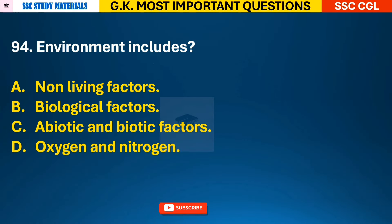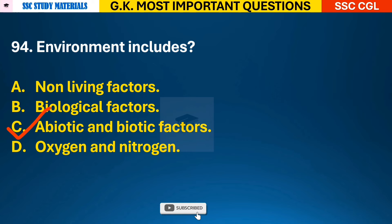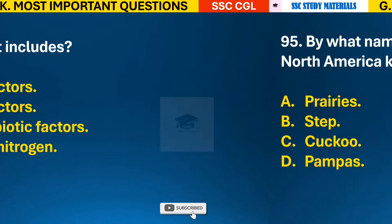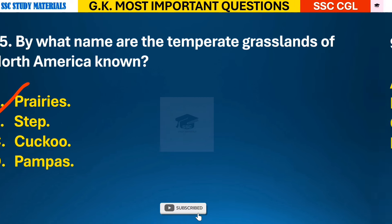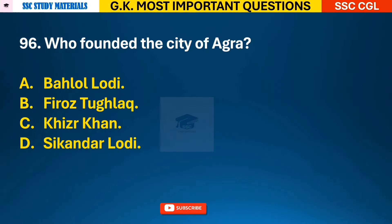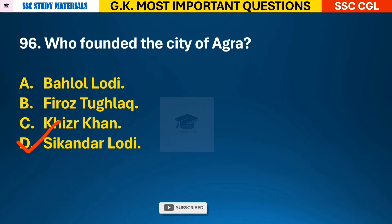Question 94: Environment includes? Answer C - it includes abiotic and biotic factors. Question 95: By what name are the temperate grasslands of North America known? Answer A - it is known as prairies. Question 96: Who founded the city of Agra? Answer D - the city of Agra was founded by Sikandar Lodi.